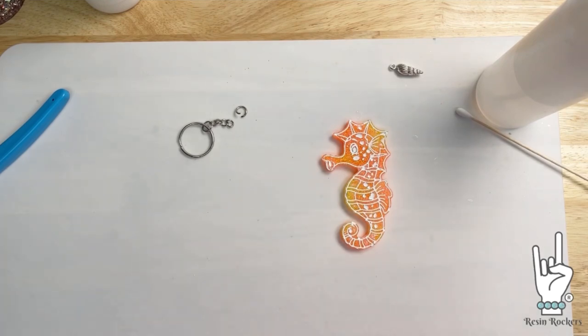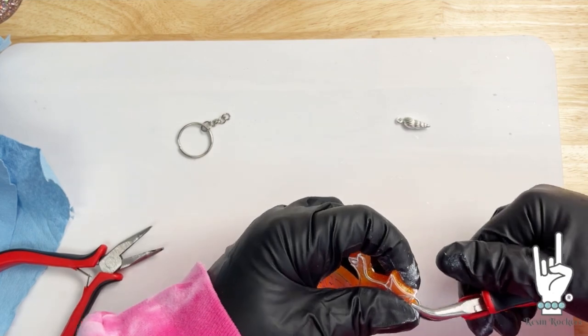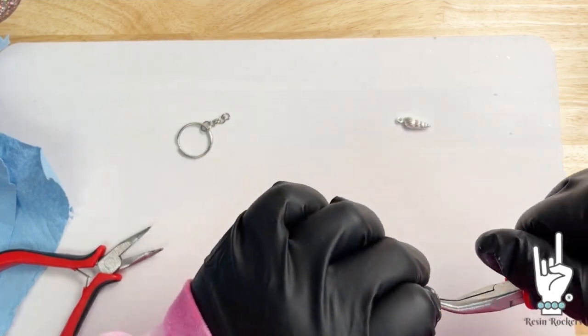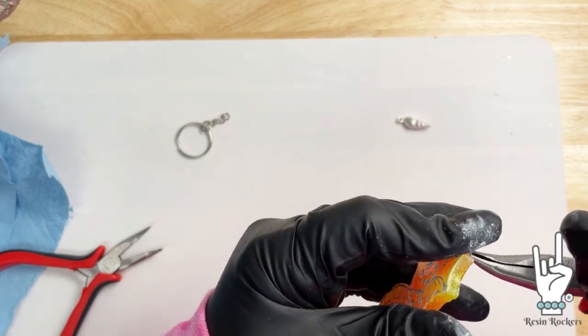So now we're going to go ahead and add our hardware. So let's take our jump ring. We're going to thread it through the hole on the top of the keychain. And then I'm going to put my charm that came in your little bonus pack on the top.